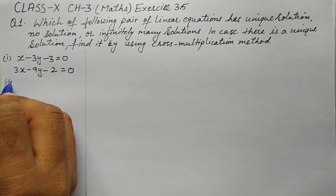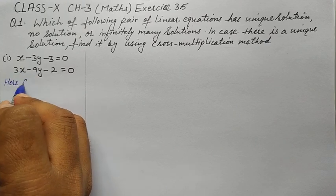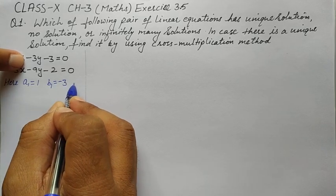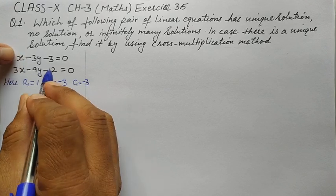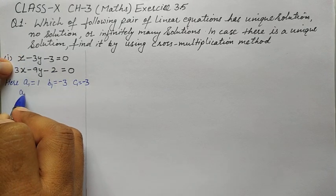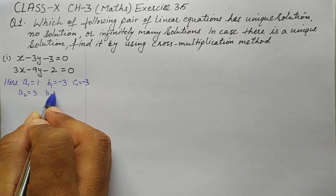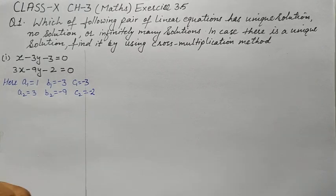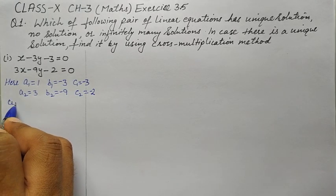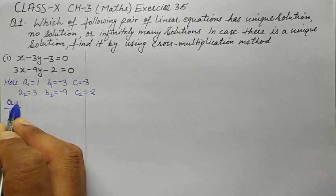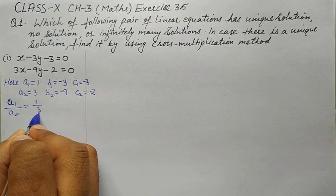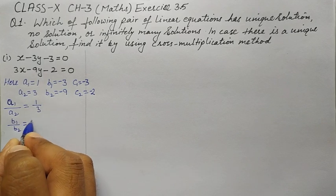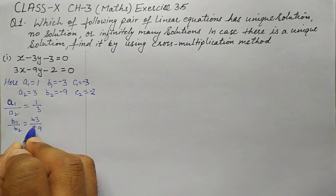Comparing with the general form for Part 1: a1 = 1, b1 = −3, c1 = −3, and a2 = 3, b2 = −9, c2 = −2. So a1/a2 = 1/3, and b1/b2 = −3/−9 = 1/3.